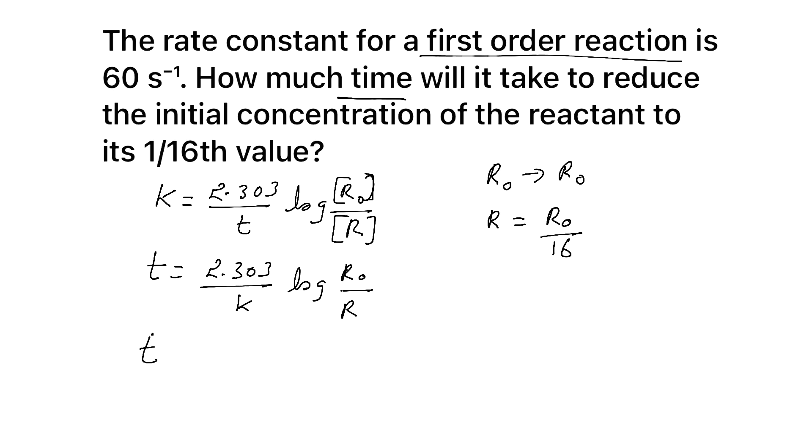t equals 2.303 by K. What is rate constant? 60, correct. Log R₀ by R₀ by 16. R₀ get cancelled and 16 will come to the numerator. So t equals 2.303 by 60 log 16.